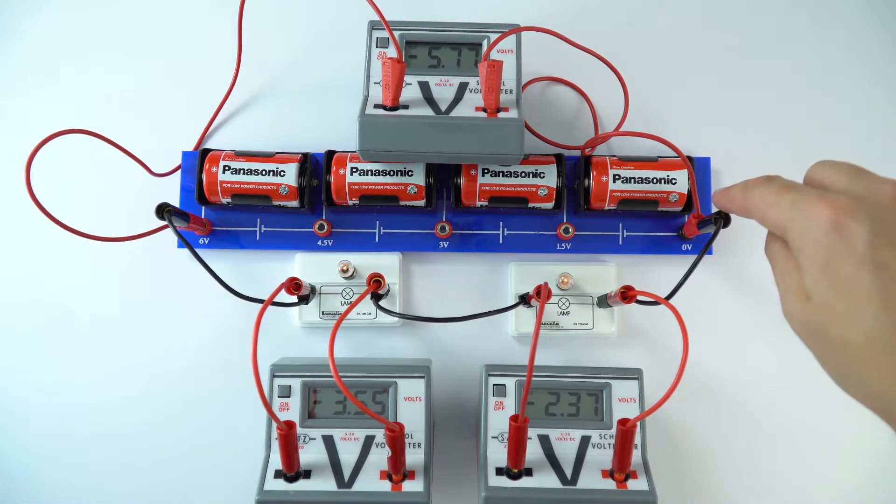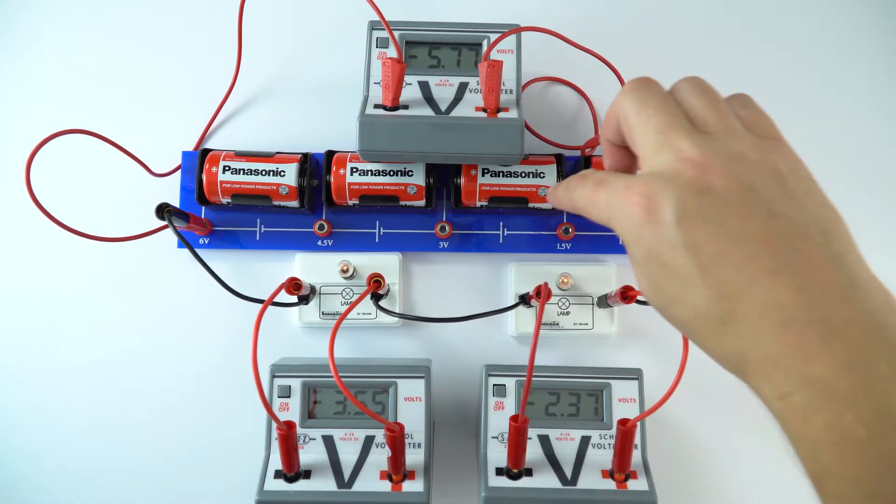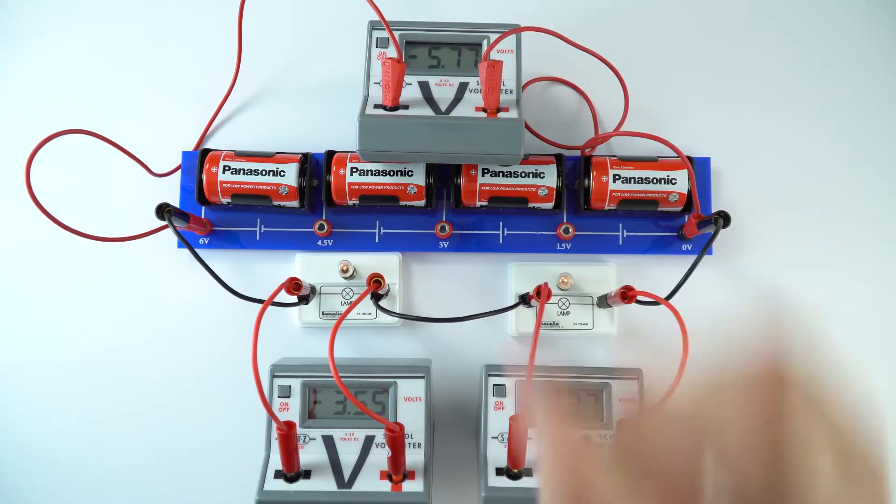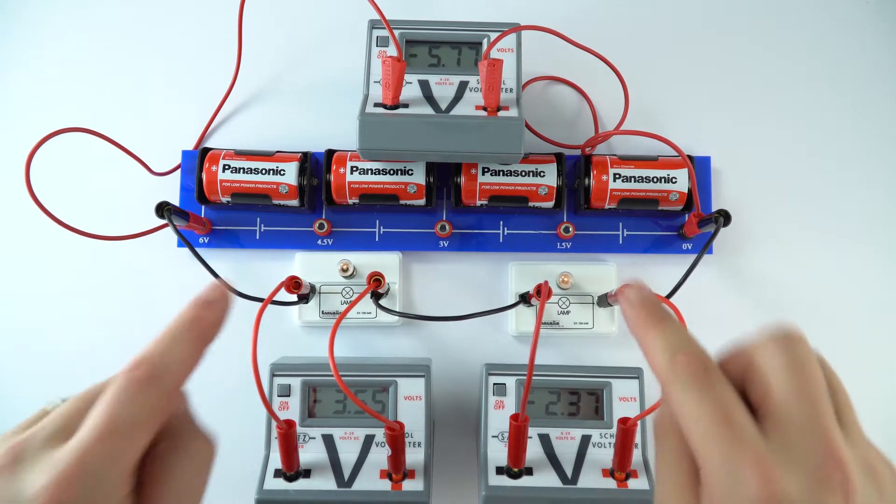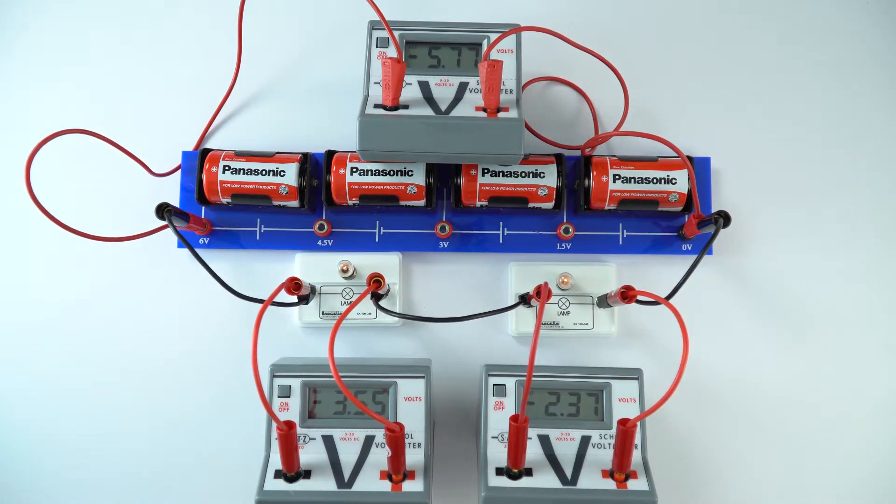What we have across the whole battery pack, so the voltage or the potential difference of this circuit, is about 5.77 volts. And actually what we find is that in a series circuit that potential difference is shared across components. So we've got about 3.5 there and 2.3.